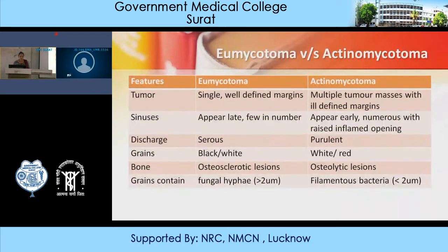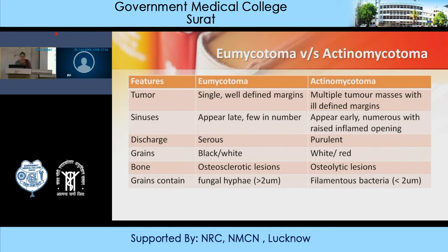Discharge is serous in Eumycetoma, while purulent discharge is seen in Actinomycetoma. Grains are black and white in Eumycetoma; white or red in Actinomycetoma. Bony lesions are osteosclerotic in Eumycetoma, while osteolytic in Actinomycetoma. Grains contain fungal hyphae greater than 2 micrometers in size in Eumycetoma, while filamentous bacteria less than 2 micrometers are seen in Actinomycetoma.